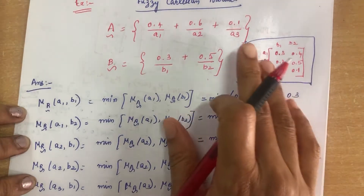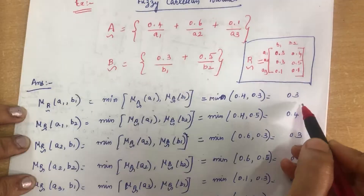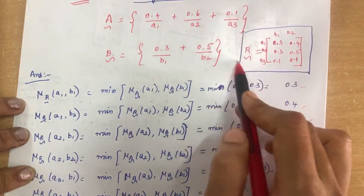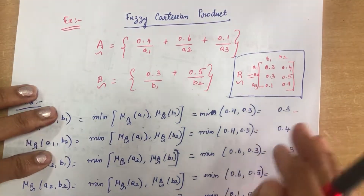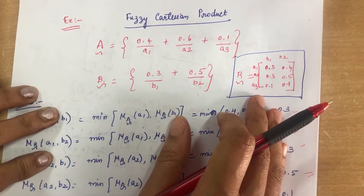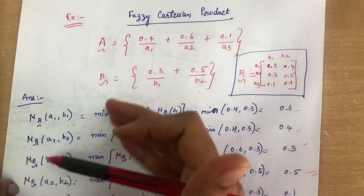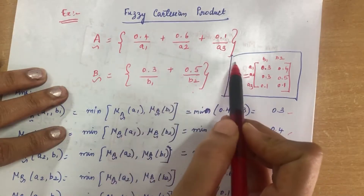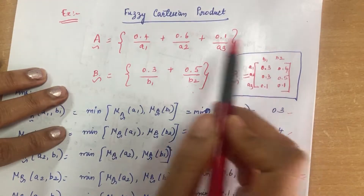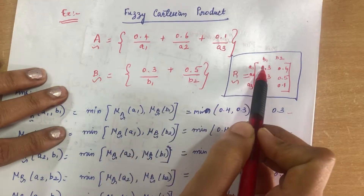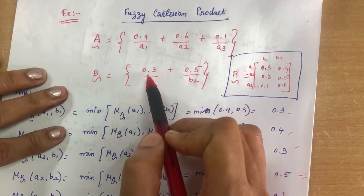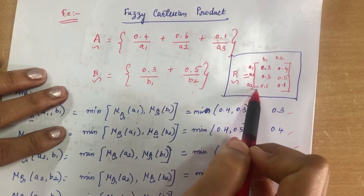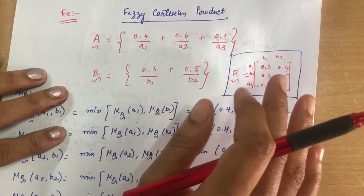Substituting all these values into a matrix — with a1, a2, a3 as rows and b1, b2 as columns — we get the fuzzy Cartesian product matrix with values 0.3, 0.4, 0.3, 0.5, 0.1, and 0.1. This is the output for the fuzzy Cartesian product. For quick reference, you can just compare each pair and take the minimum: min(0.4, 0.3)=0.3, min(0.4, 0.5)=0.4, min(0.6, 0.3)=0.3, min(0.6, 0.5)=0.5, min(0.1, 0.3)=0.1, min(0.1, 0.5)=0.1.